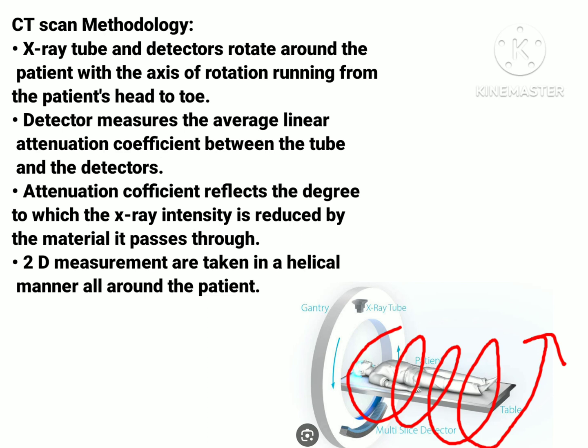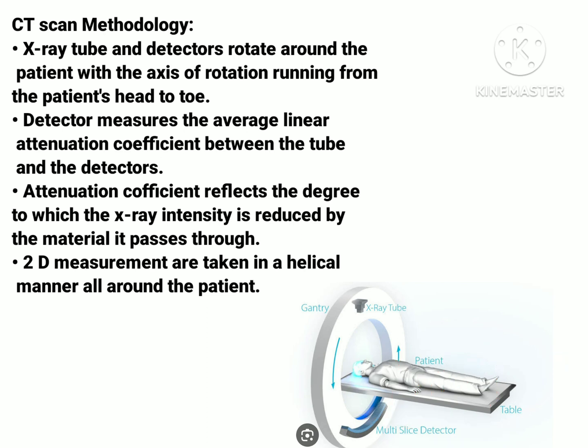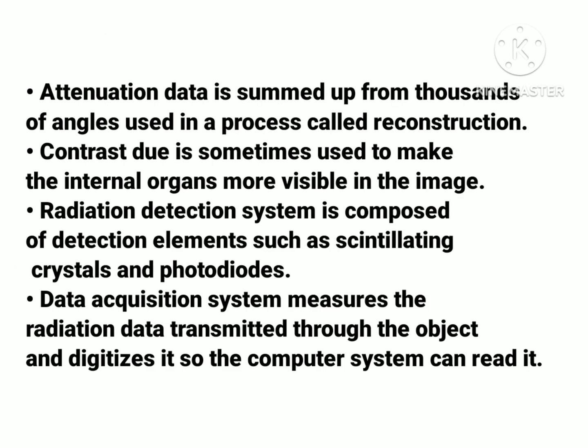After processing through the computers, the 2D image is reconstructed into a 3D image. Alternation data is summed up from thousands of angles by the detectors and then transferred to the computer for image reconstruction. Sometimes contrast is used in CT scan to make the internal organs more visible in the image.